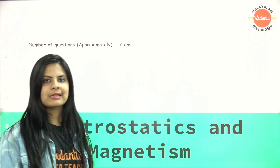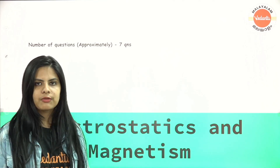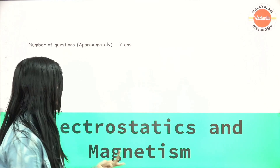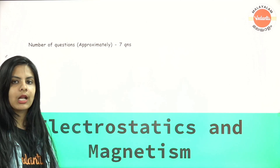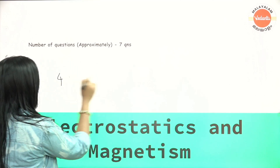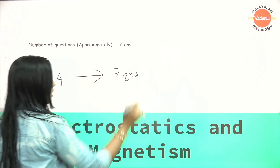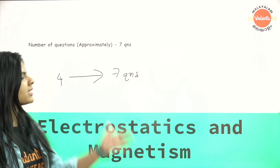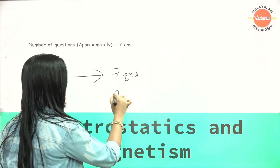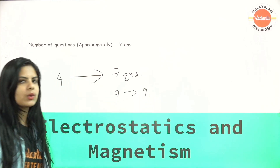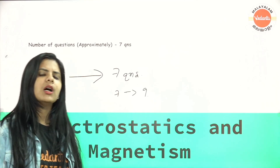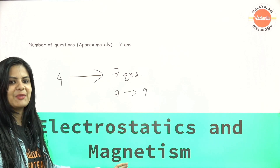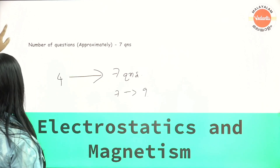Next is Electrostatics and Magnetism. This includes electric charges and fields, electrostatic potential and capacitance, moving charges and magnetism, and magnetism — four chapters in total. From these four chapters, approximately 7 to 9 questions come, with some variation.